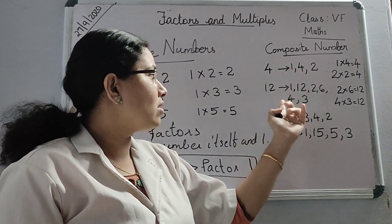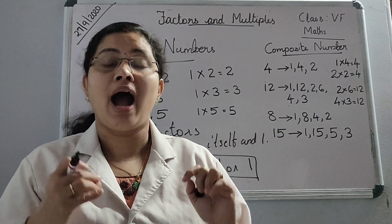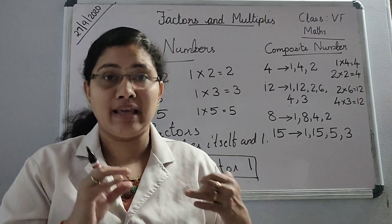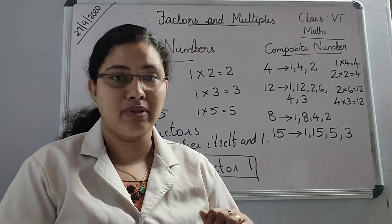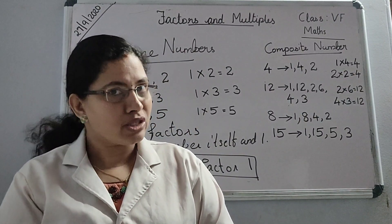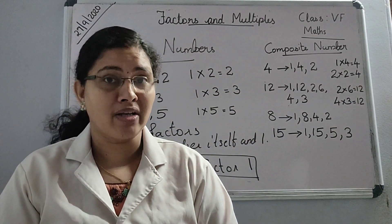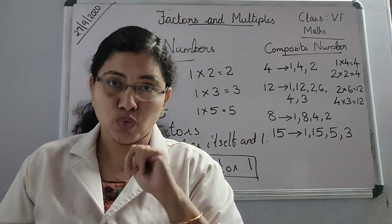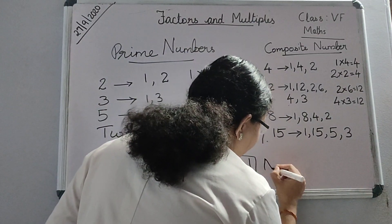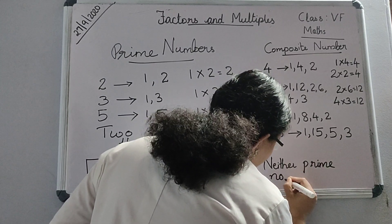So what can we say? For 4, there are 3 factors; for 12, there are 6 factors; for 8 and 15, there are 4 factors each. Generally, composite numbers have factors other than 1 and the number itself — that means there will be at least one more factor. For a prime number there are only 2 factors, but for a composite number there should be at least 3 factors. So 1 is neither prime nor composite.